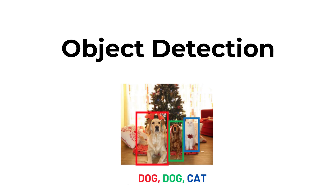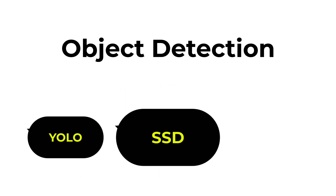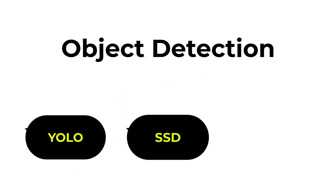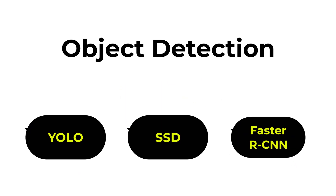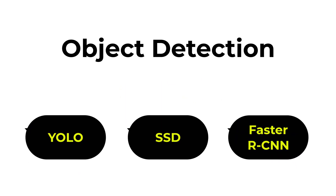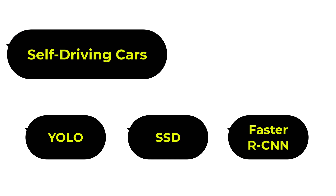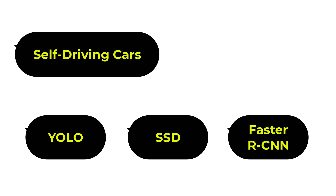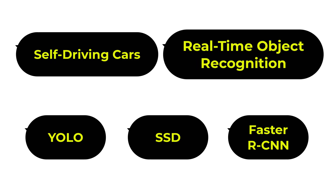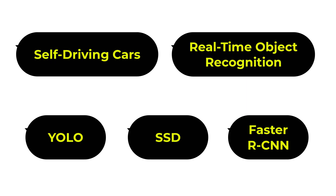The models you can use to implement object detection are YOLO, SSD, and Faster R-CNN. You can also use these architectures in other projects, like self-driving cars and real-time object recognition.